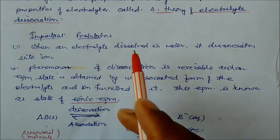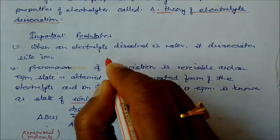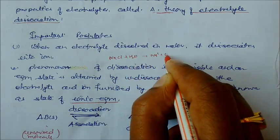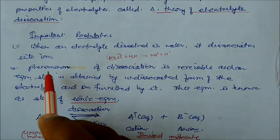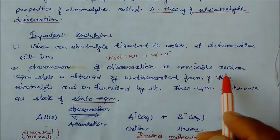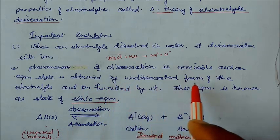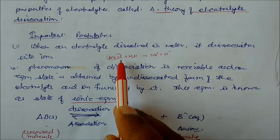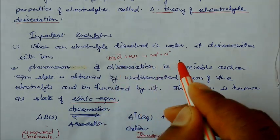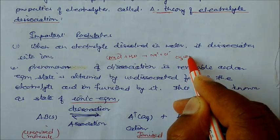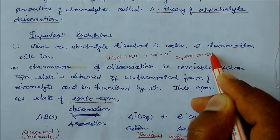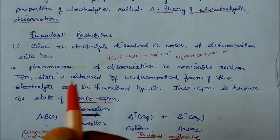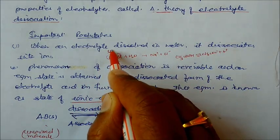The first postulate: when an electrolyte is dissolved in water, it dissociates into ions. For example, NaCl put into water converts to Na⁺ and Cl⁻. This dissociation is reversible and equilibrium is attained by the undissociated form of the electrolyte — but only for weak electrolytes. For strong electrolytes like NaCl, the reaction is not reversible. For weak electrolytes like acetic acid, the reaction is reversible.